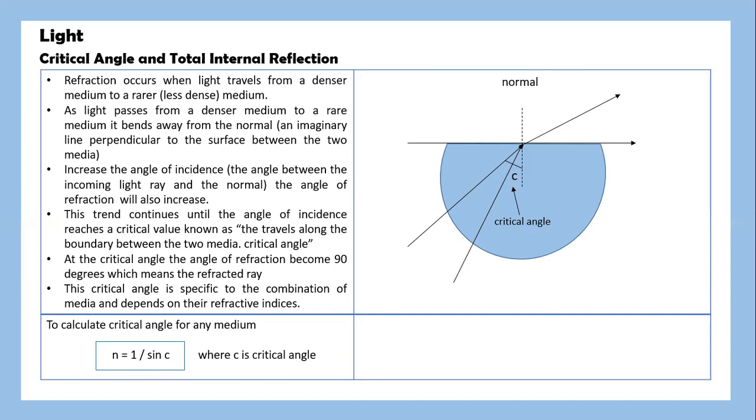At the critical angle, the angle of refraction becomes 90 degrees, which means the refracted ray travels along the boundary. This critical angle is specific to the combination of media and depends on their refractive indices. To calculate the critical angle for any medium: n equals 1 divided by sin C, where C is the critical angle.